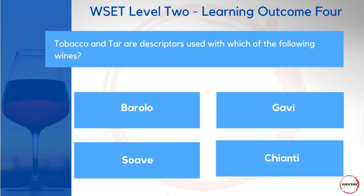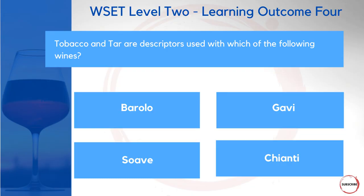Staying on the theme of wine tasting but using our sense of smell: tobacco and tar are descriptors used with which of the following wines? Is it Barolo, Gavi, Soave, or Chianti? This question pits two red wine styles against two white wine styles. Tobacco and tar aromas are quite heady and deep — not associated with white wines — which leaves us with Barolo and Chianti. Tar is a famous descriptor alongside tobacco when it comes to Barolo.